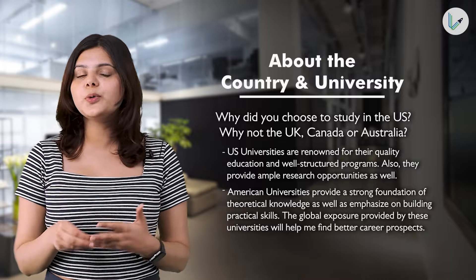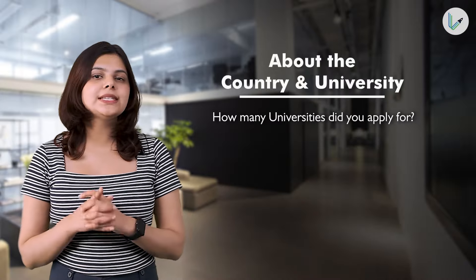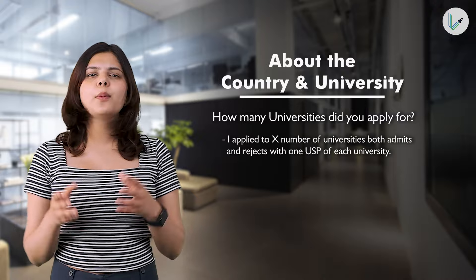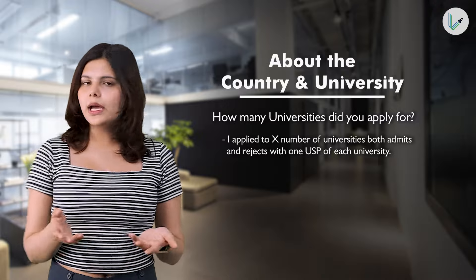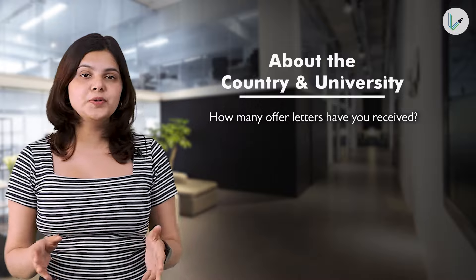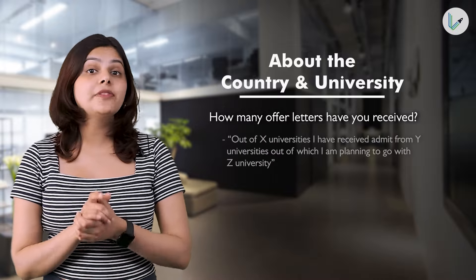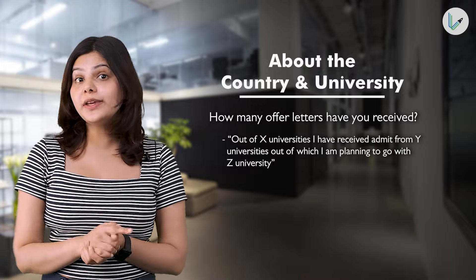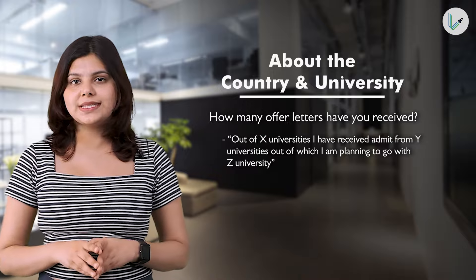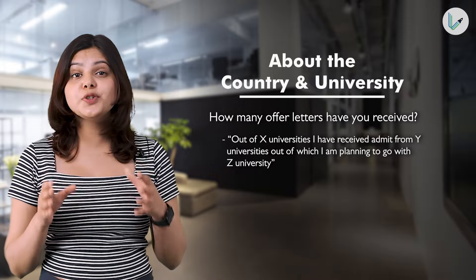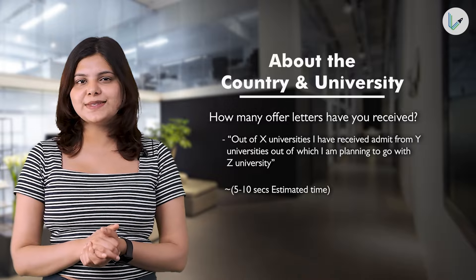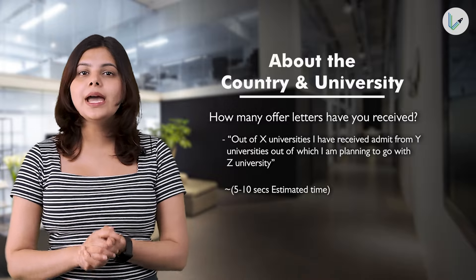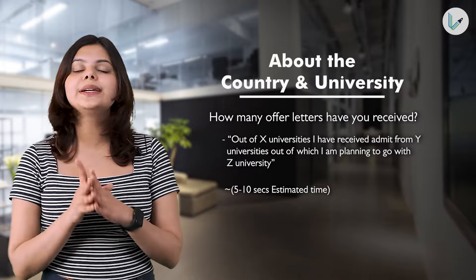A vague answer would be: 'Because there are good schools in the U.S. and I will have good job opportunities after completion of my program.' For how many universities did you apply, an ideal answer is: 'I applied to X number of universities, both admits and rejects, with one USP of each university.' For offer letters received, the ideal answer is: 'Out of X universities, I have received an admit from Y universities, out of which I'm planning to go with said university.' The answer should be about 5 to 10 seconds.